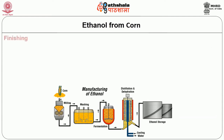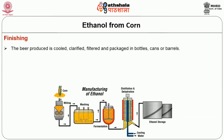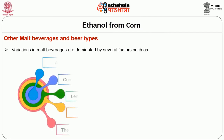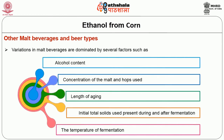The last step is the finishing: the beer produced is cooled, clarified, filtered and packed in bottles, cans or barrels. Variations in malt beverages are dominated by several factors such as alcohol content, concentrations of the malt and hops used, length of aging, initial total solids, and the temperature of fermentation.